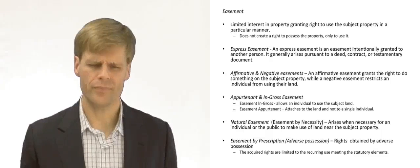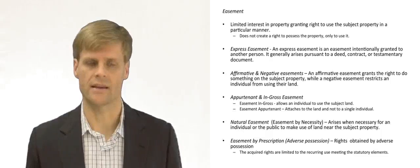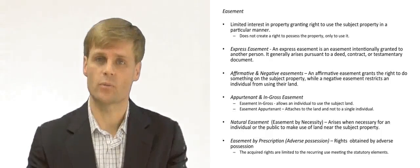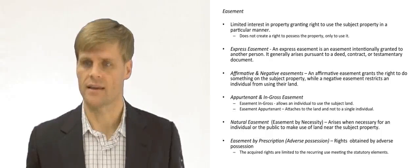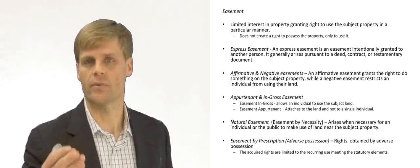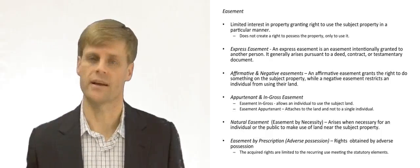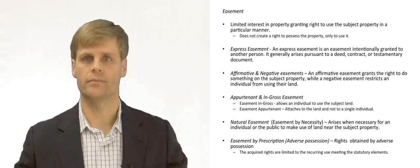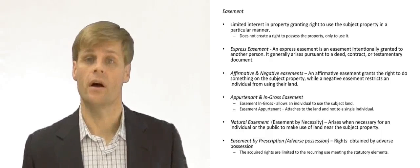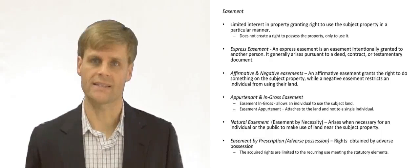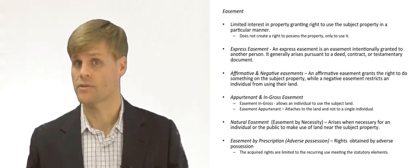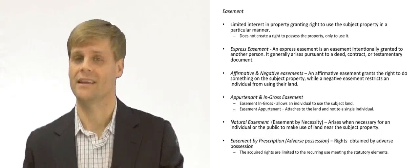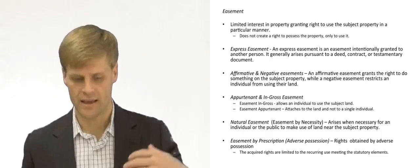There are several categories of easements and methods by which easements arise that need to be understood. An express easement is simply where a person expressly grants easement rights to another person — they write it out in the form of an agreement and say here are your rights to drive across this property, cross this property, run cattle across this property, dig a ditch, build a railroad, or do whatever across this property, but you don't fully own the property. I still get to use and retain most of my ownership rights in the property, to the extent those rights don't infringe upon the limited rights I'm granting to you.